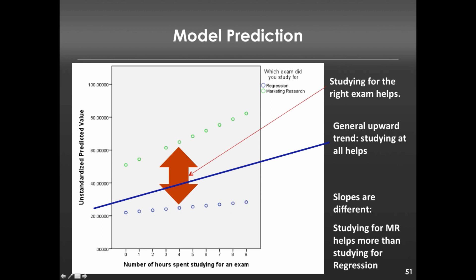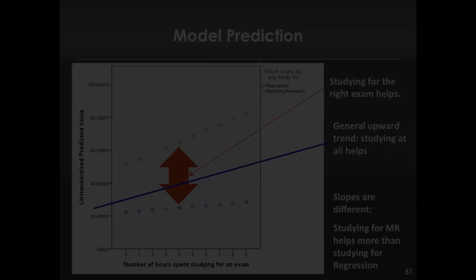So this is the idea of an interaction: one variable's influence — in this case, hours spent studying — on an outcome variable — in this case, your final score — depends on the level of another variable, whether you studied for the right exam or the wrong exam. That's the intuition behind interactions, and we'll look at how to implement these in a business context when we return to the case from the previous videos.